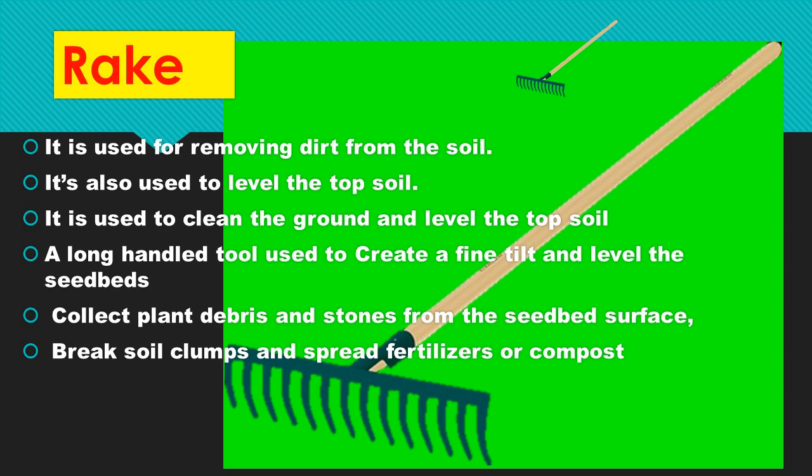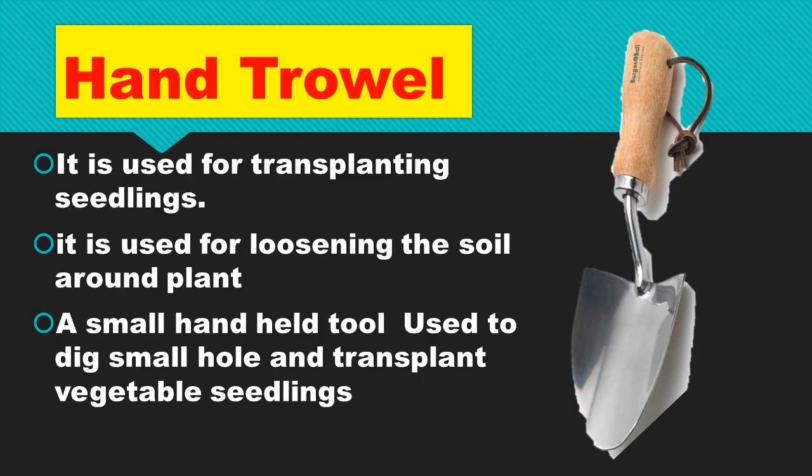The hand trowel is used for transplanting seedlings. It is used for loosening the soil around the plant. It is a small hand-held tool used to dig small holes and transplant vegetable seedlings.